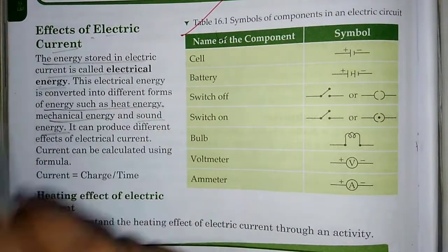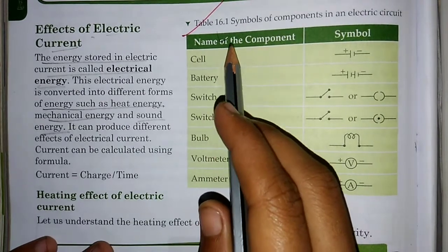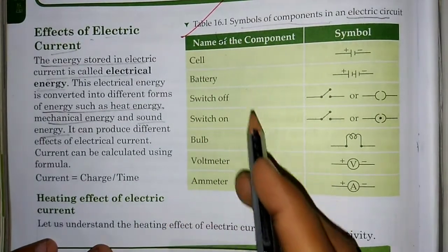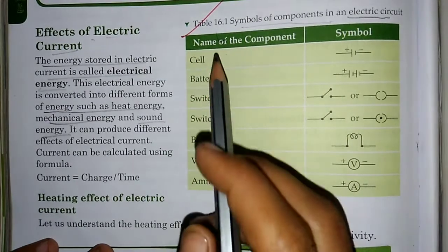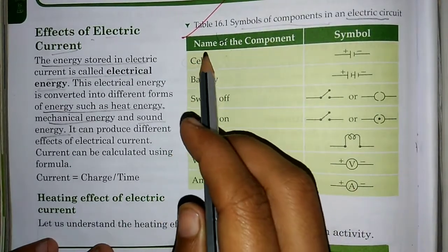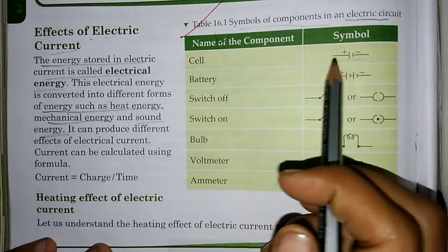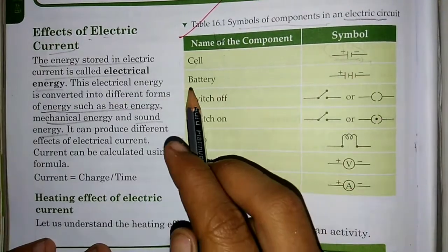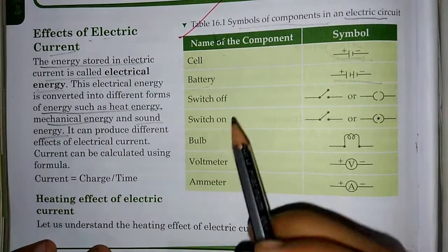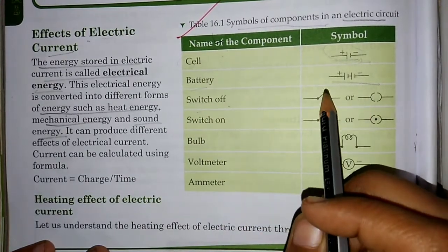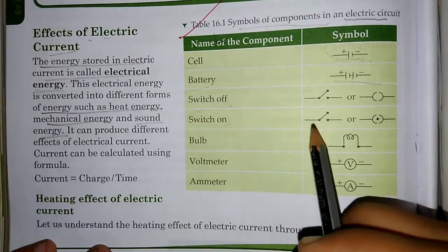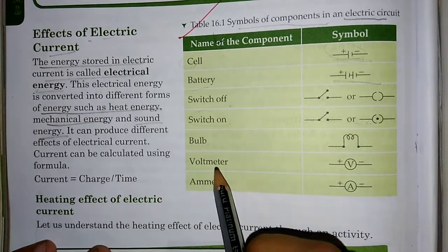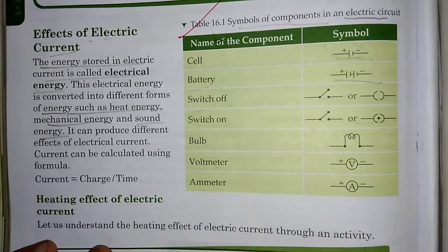Effects of electric current. First, I want to show you the symbols of the components in the electric circuit. The cell symbol shows two terminals — positive and negative. Battery has its own symbol. Switch off shows a broken circuit, switch on shows a closed circuit. And these are the symbols for the bulb, voltmeter and ammeter.